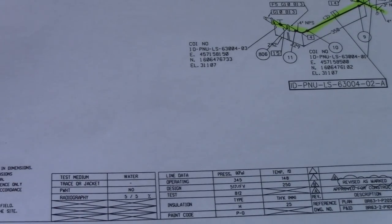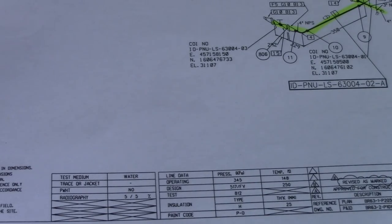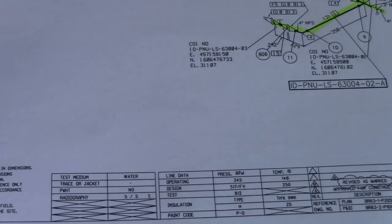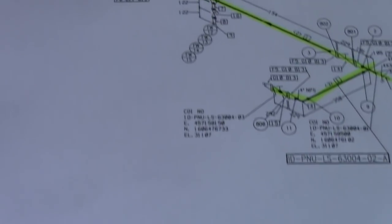Number twelve is the paint system, which we can also see here in this table. What is the paint system of this isometric drawing — the paint code. Next is P&ID, number thirteen. We can see the P&ID number on this isometric drawing. P&ID stands for Piping and Instrumentation Diagram.